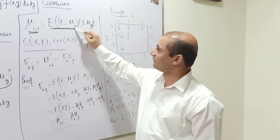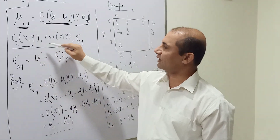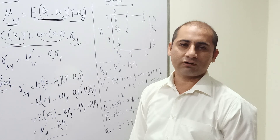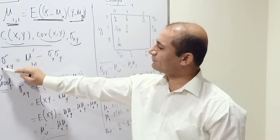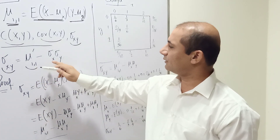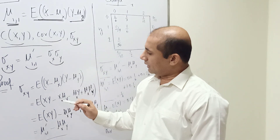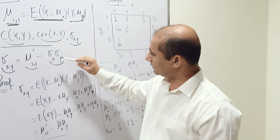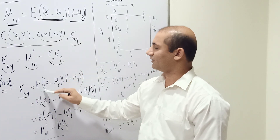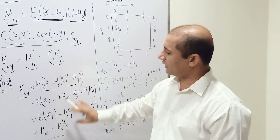Covariance is the expected value of (x − mu_x)(y − mu_y), and it is denoted cov(x,y), CV(x,y), or sigma_{xy}. We will use the notation sigma_{xy} most often. This sigma_{xy} equals the first product moment about the origin minus sigma_x times sigma_y. We expand the product and then apply the expectation operator.